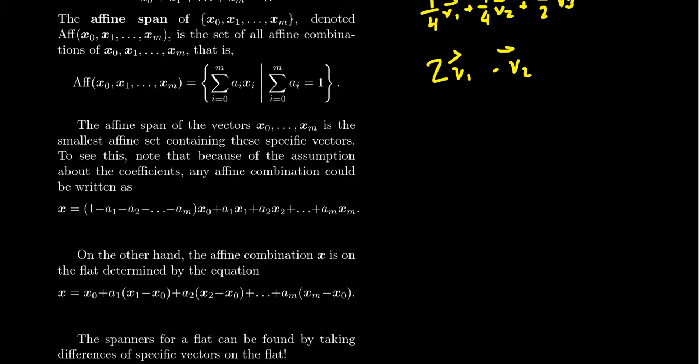Now, if I were to distribute the x₀ onto all of these things and then combine terms not by the vector but by the scalar, this equation would transform into this one right here. x is equal to x₀ plus a₁(x₁ - x₀) plus a₂(x₂ - x₀), all the way up to aₘ times (xₘ - x₀) right here.